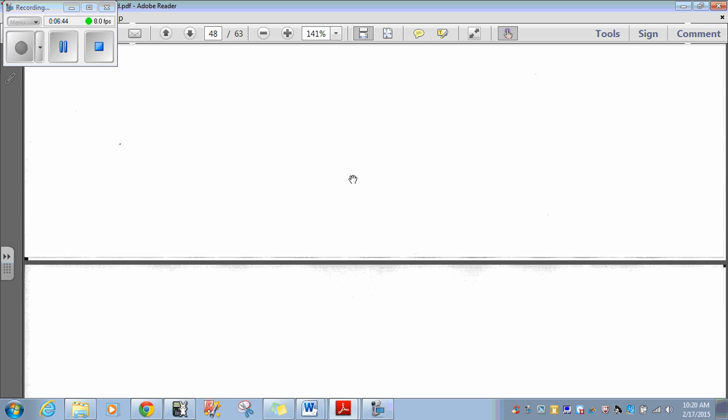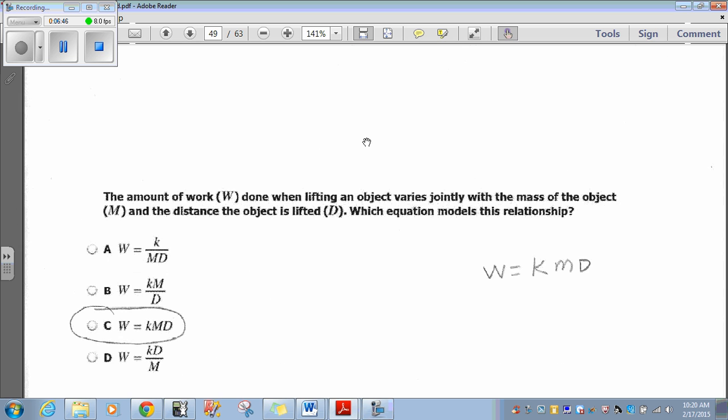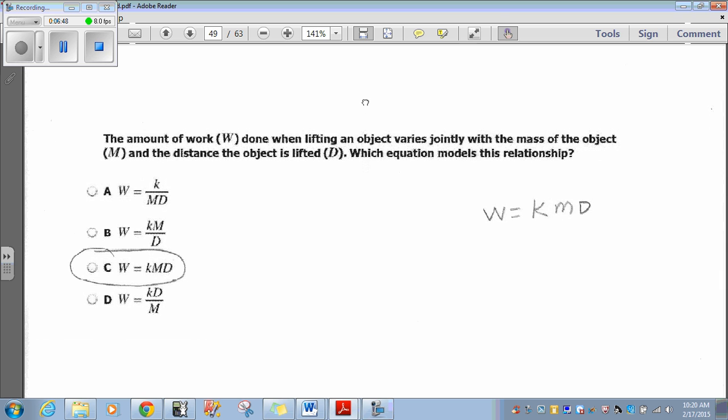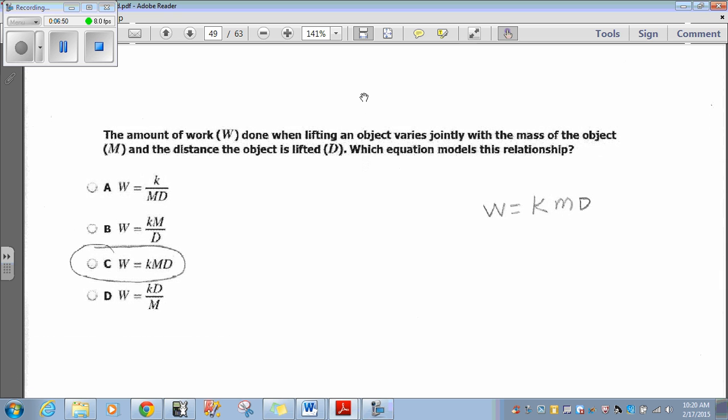Question 45. The amount of work, W, done when lifting an object varies jointly with the mass of the object, M, and the distance the object is lifted, D, which equation models the relationship.